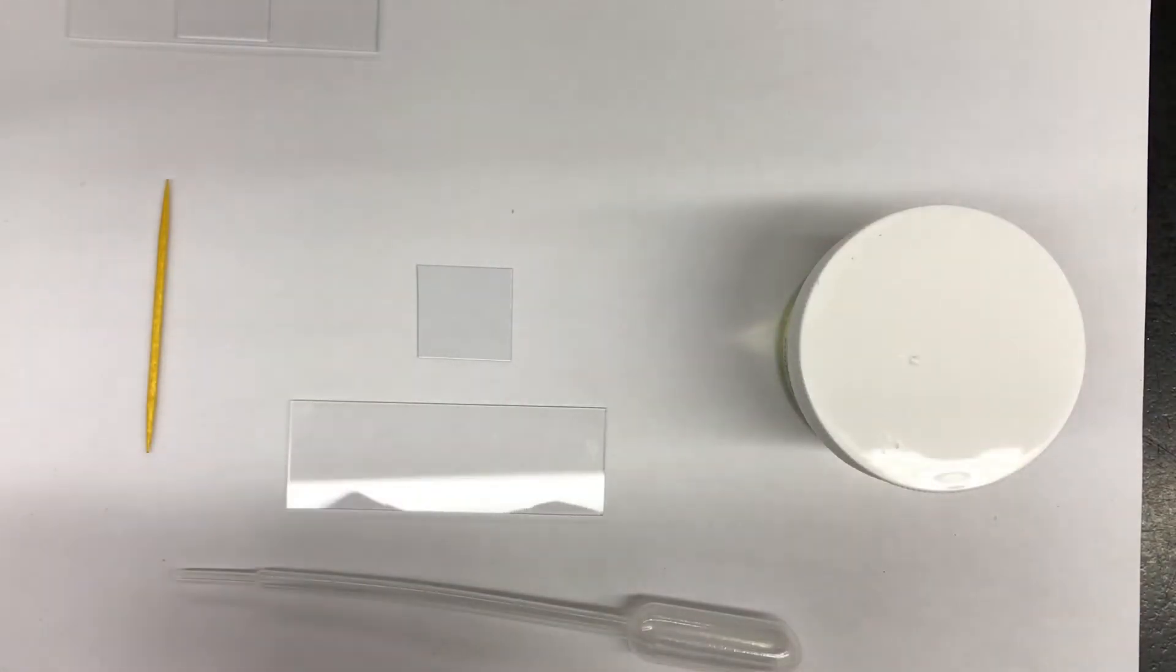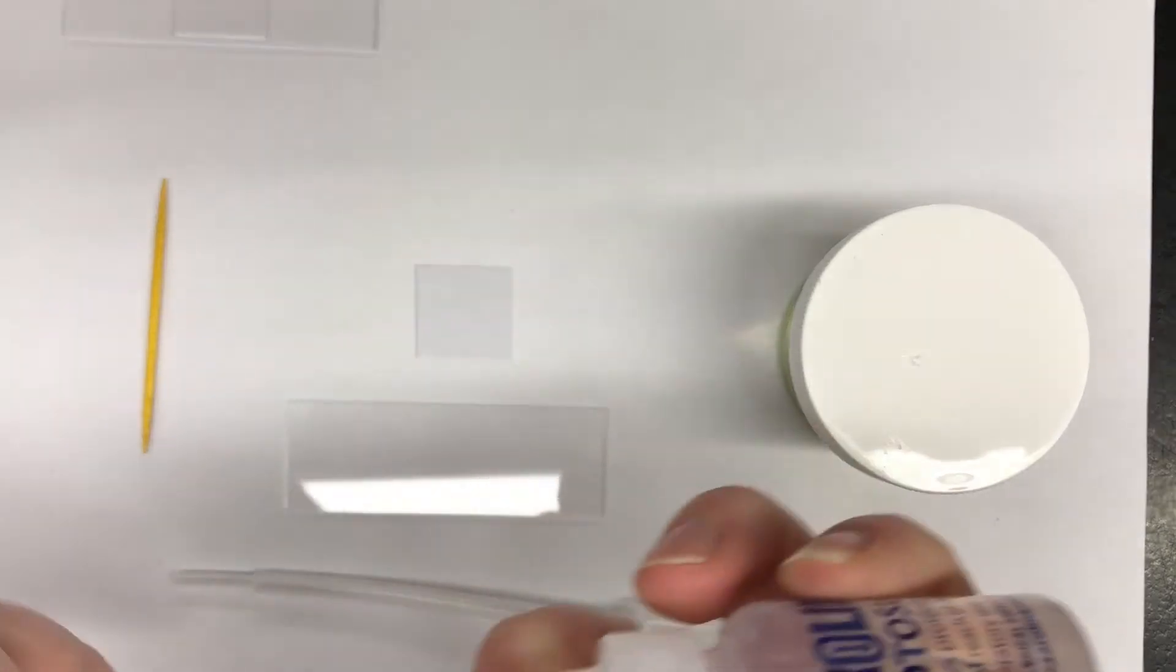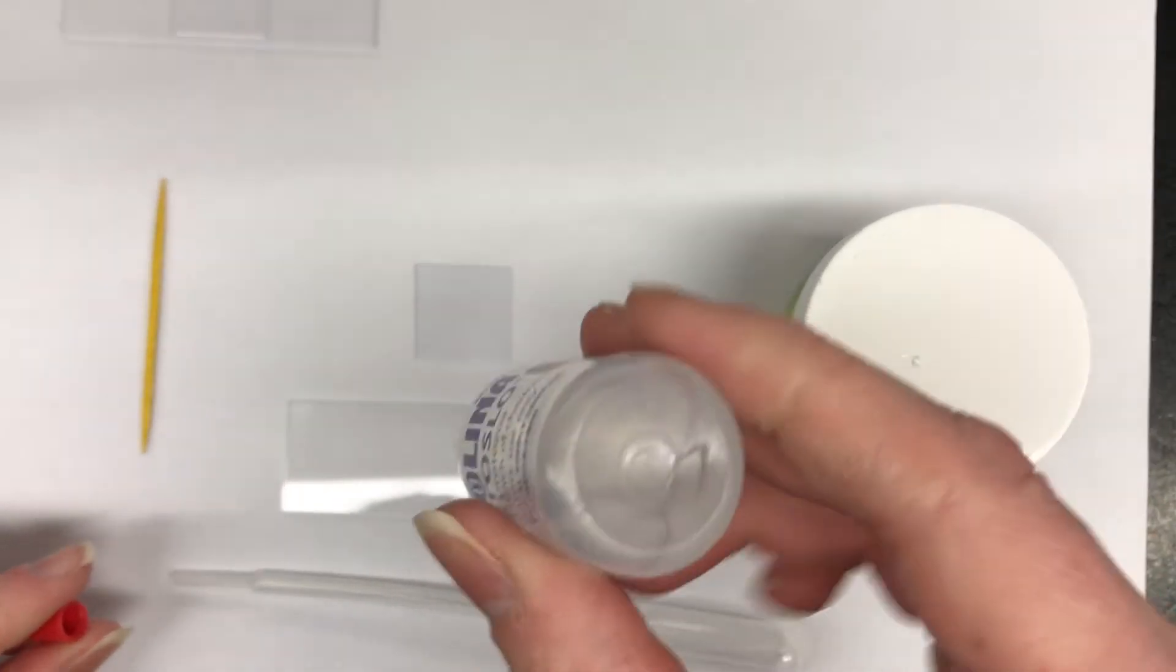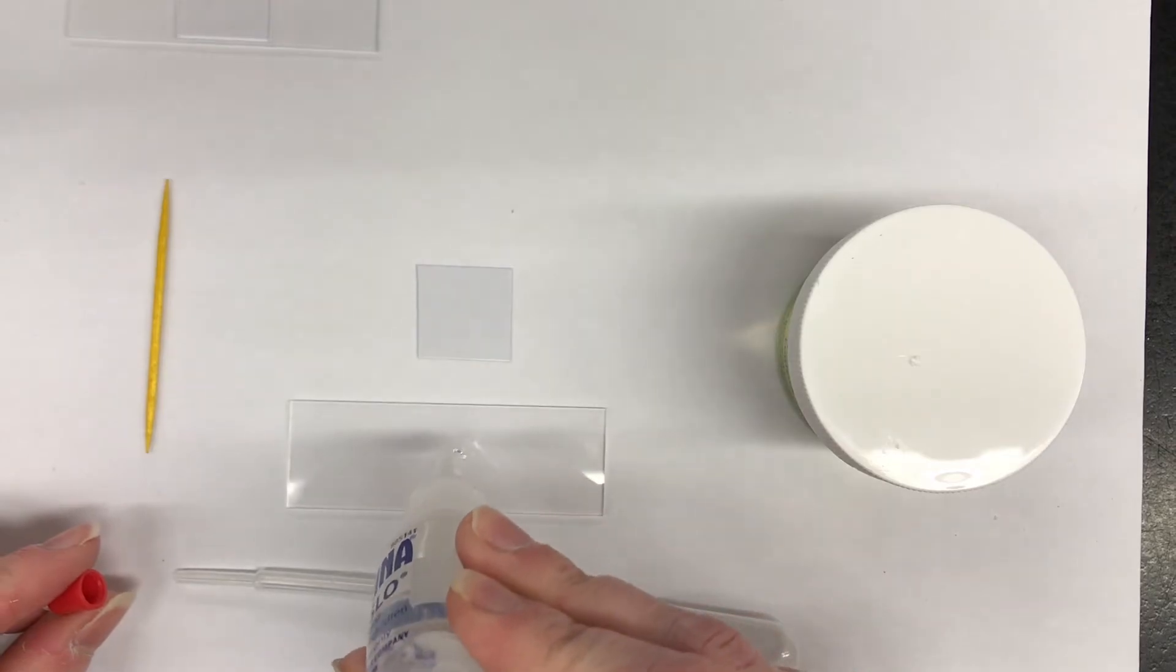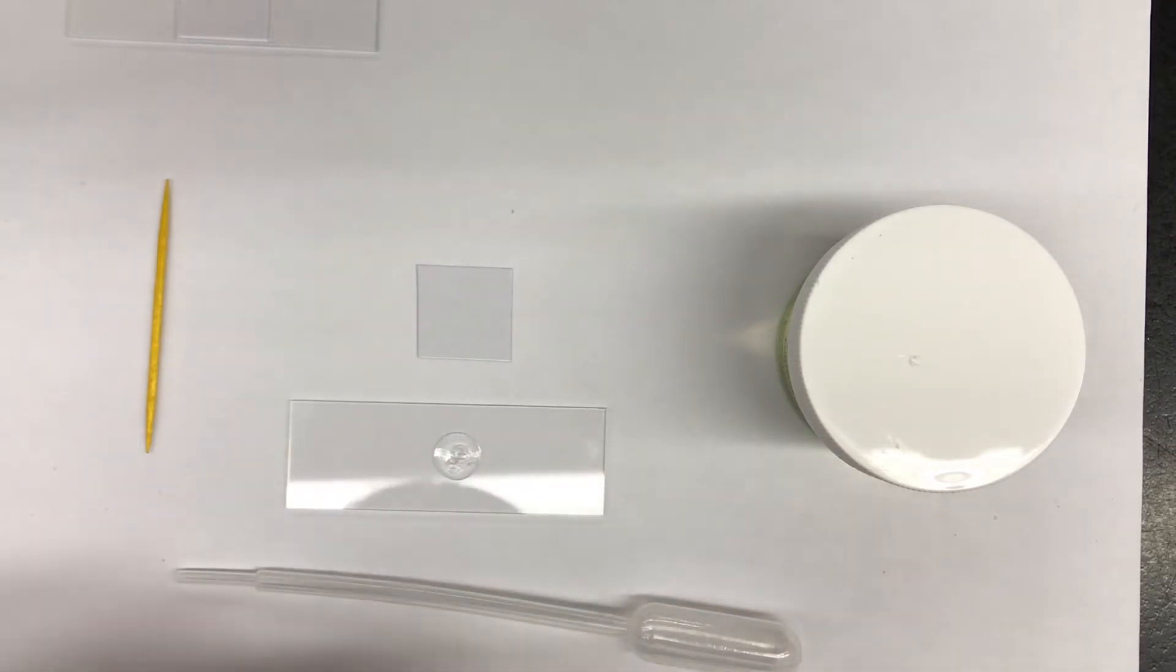Take your protosloe. You're going to invert the bottle and place one drop directly in the center of your slide. Put the cap back on the protosloe.